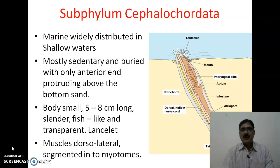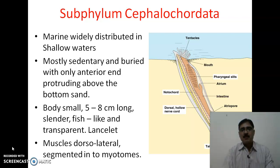The body is small, five to eight centimeters long. It is cylindrical, fish-like, and generally laterally compressed, transparent, with both the anterior end and posterior end pointed — hence the name lancelet. The muscles are dorsolaterally located and segmented in the form of myotomes.